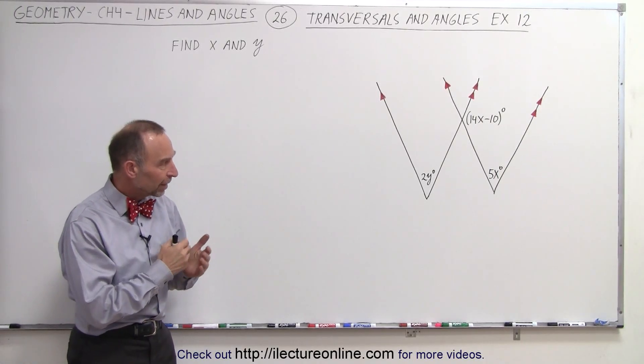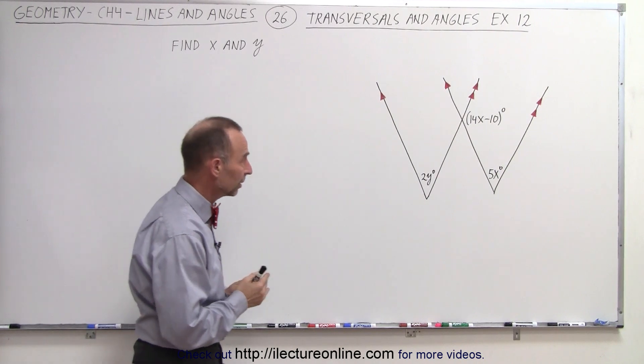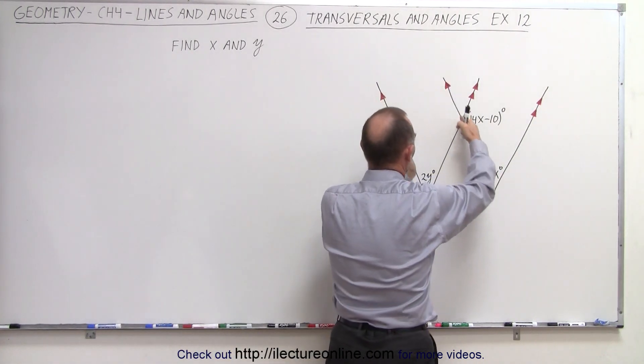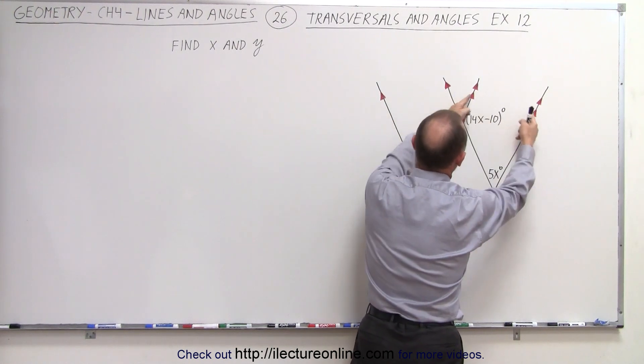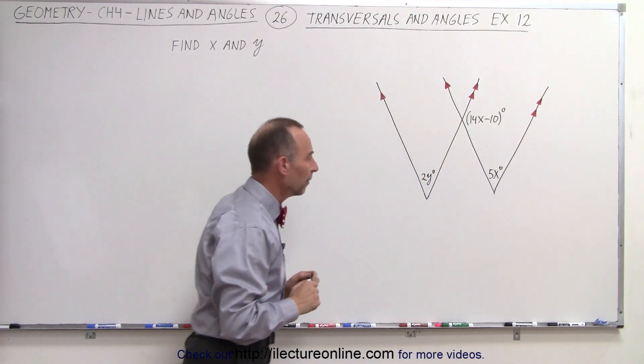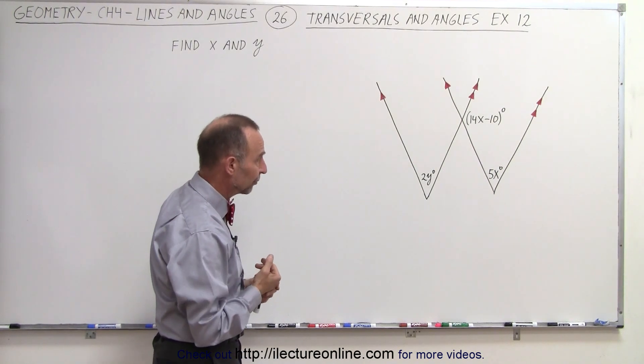Welcome to our lecture online. Now let's take a look at this example. Notice we have two sets of parallel lines. These two lines are parallel to one another, and these two lines are parallel to one another. Notice the indications to make it so. And now we're supposed to find the value for x and the value for y.